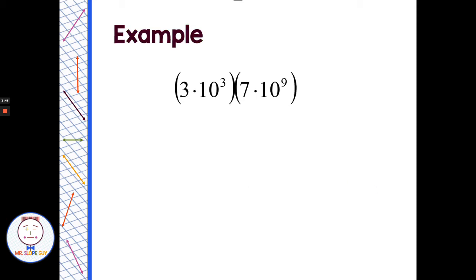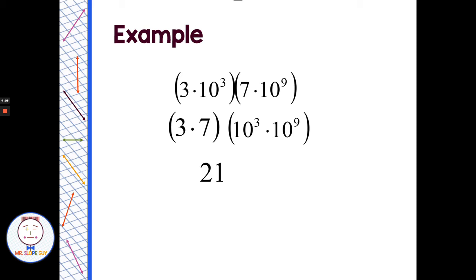Now we have 3 times 10 to the third times 7 times 10 to the ninth. The 3 and 7 are not like bases, so we multiply those normally. But 10 to the third times 10 to the ninth do have the same base, so we look at 3 times 7 and 10 to the third times 10 to the ninth separately. 3 times 7 gives us 21, and 10 to the third times 10 to the ninth gives us 10 to the twelfth. This looks like scientific notation, but the first number is not between 1 and 10, so it's not — it's just multiplying by a power of 10.